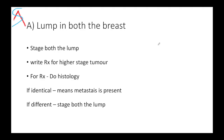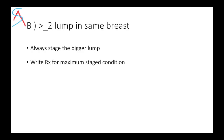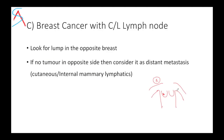Some important scenarios: if there is a lump in both breasts, stage both lumps and write treatment for the higher stage tumor. For treatment purposes, do histology — if both tumors come out identical, it means distant metastasis from one breast to another; if different, stage them separately. If there are two or more lumps in the same breast, always stage the bigger lump and write treatment for the maximum stage condition. If breast carcinoma is on the right side but lymph nodes are enlarged on the left, first look for any lump in the left breast; if none, consider it distant metastasis through internal or cutaneous lymphatics.